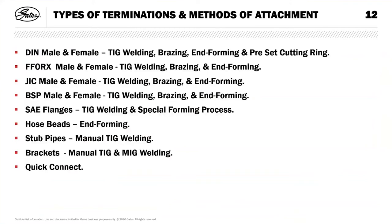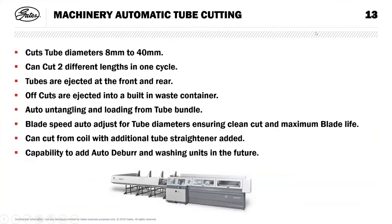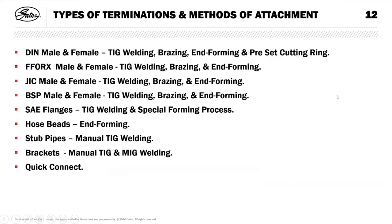Terminations are basically the same as what you'll find on hose assemblies — it's a question of how you attach them. Within Gates we can do end forming, which is the cheapest solution because we can use a pre-plated material, which is more cost effective, and you haven't got lengthy processes like brazing and TIG welding. But we can also do those where there's no other option. For male fittings, for example, it will either be TIG welded or brazed.